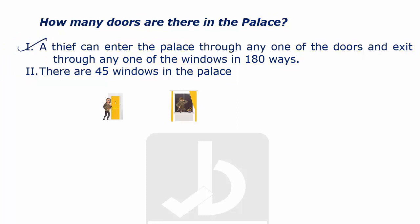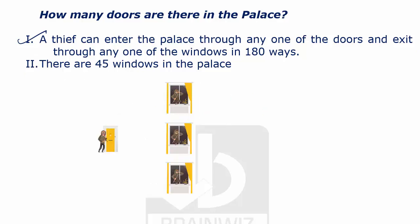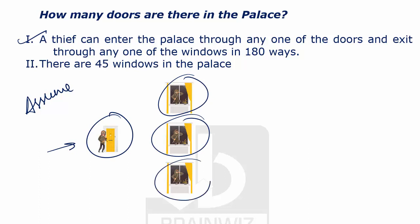Now let's see with statement one. Suppose there is only one door and one window for the palace — the thief can enter and come out one way only. Now assume the thief has one door to enter and three windows for escape. He can enter the door and exit from the first, second, or third window — there are three ways he can escape.